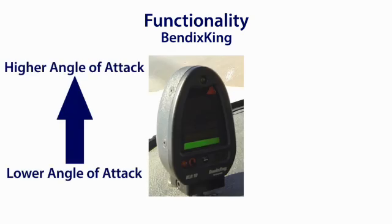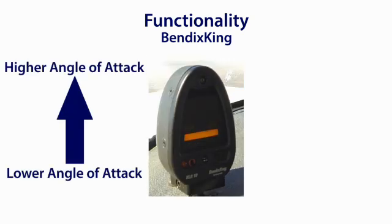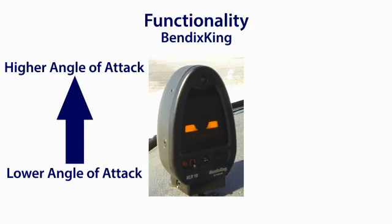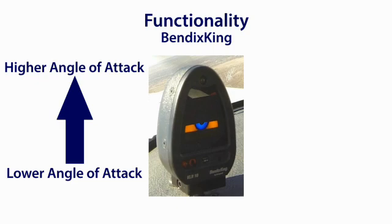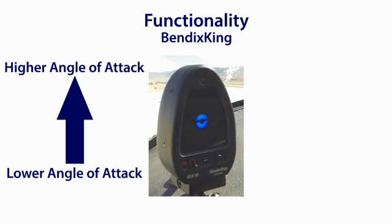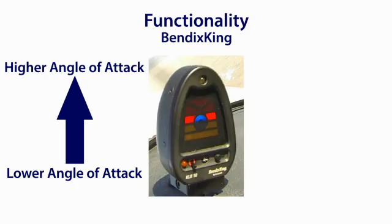The Bendix King device features an on-speed donut and a stall warning arrow indicating that the angle of attack must be reduced. It gives a verbal warning indicating that the pilot must take action to correct the AOA, and gives this warning when the aircraft is approaching stall. This warning is usually in advance of the installed stall system, which gives the pilot advanced warning for stall avoidance.